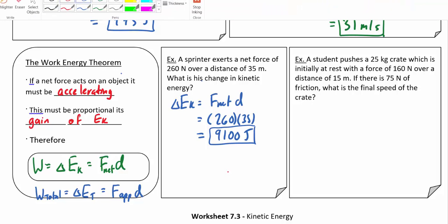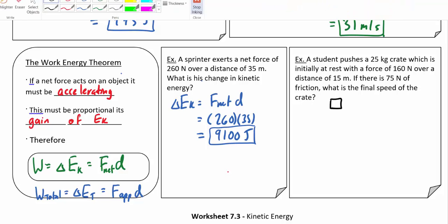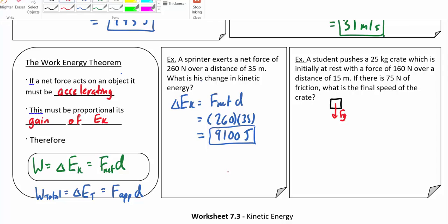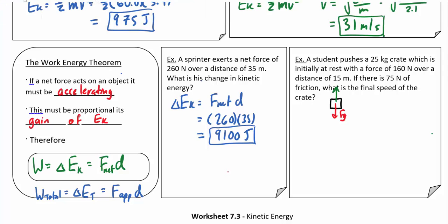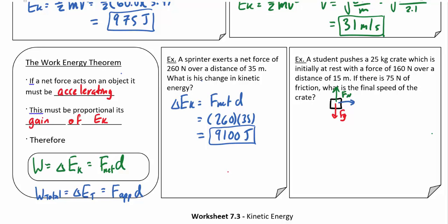Here we've got a student pushing a 25 kilogram crate initially at rest with a force of 160 newtons. I know what you're thinking, let's draw a free body diagram. Of course we're going to do that. We've got a force of gravity here, a normal force there, an applied force over this way of 160, and a friction force back that way of 75.